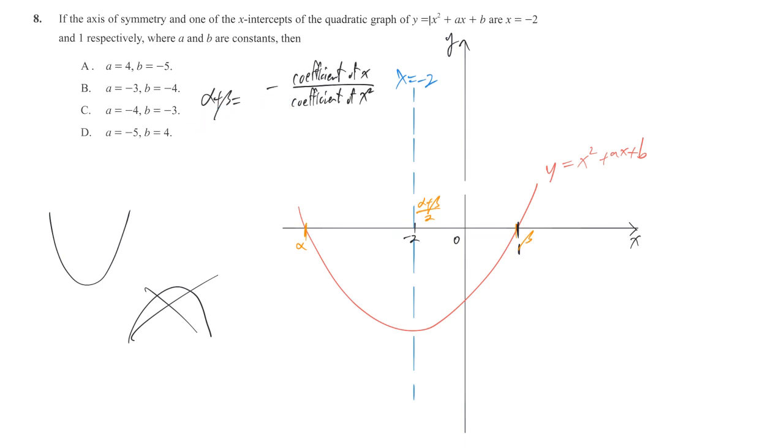We learned that sum of roots should be negative coefficient of x divided by coefficient of x squared. Usually we say negative b over a, but this time the position of a and b are not exactly the same as the formula. So we just use the original expression, coefficient of x over coefficient of x squared. In this case, coefficient of x is a. Coefficient of x squared is positive 1. So negative a over 1 is negative a. And based on negative 2, we find that alpha plus beta over 2 should equal negative 2. And then alpha plus beta already found is negative a. So by solving this equation, we know that a is equal to 4, which is enough for us to sort out the answer is A.